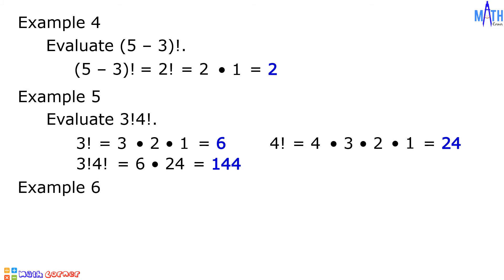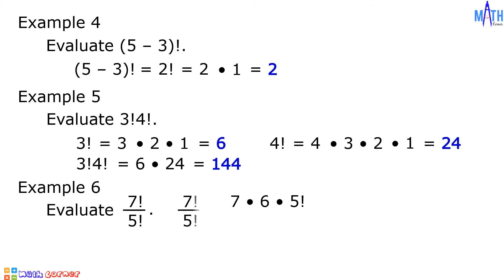Example number 6: evaluate 7 factorial over 5 factorial. If we rewrite 7 factorial as 7 times 6 times 5 factorial, then 7 factorial over 5 factorial becomes 7 times 6 times 5 factorial over 5 factorial. Canceling out the common factor, we are left with 7 times 6, which is equal to 42.